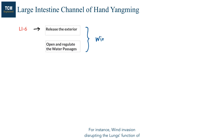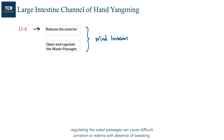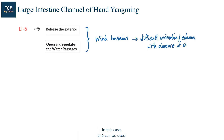For instance, wind invasion disrupting the lungs' function of regulating the water passages can cause difficult urination or edema with absence of sweating. In this case, LI6 can be used.